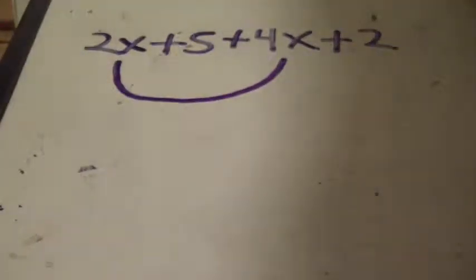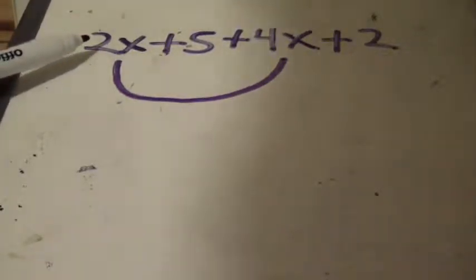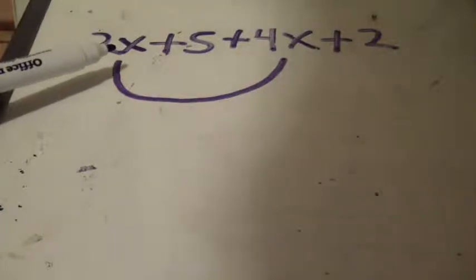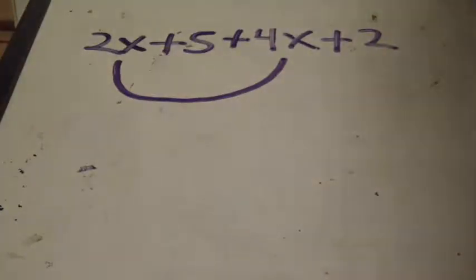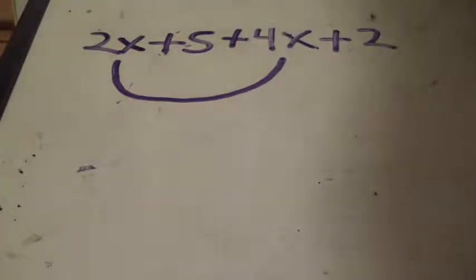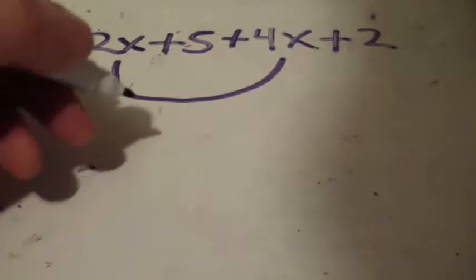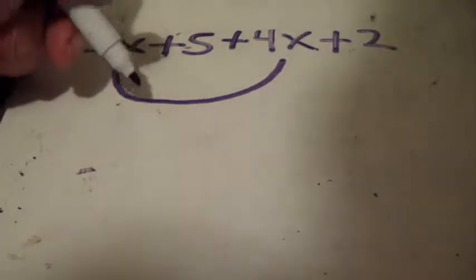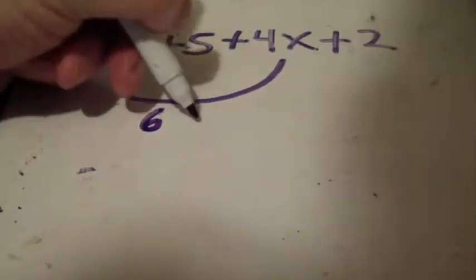These right here with the x's, these are called the variables, attached with its coefficient, which is two. So we have two x and a four x. That's like simply saying two oranges and four oranges. What we want to do is simply add them together because they're attached by positive numbers. Two x plus four x is simply six x.